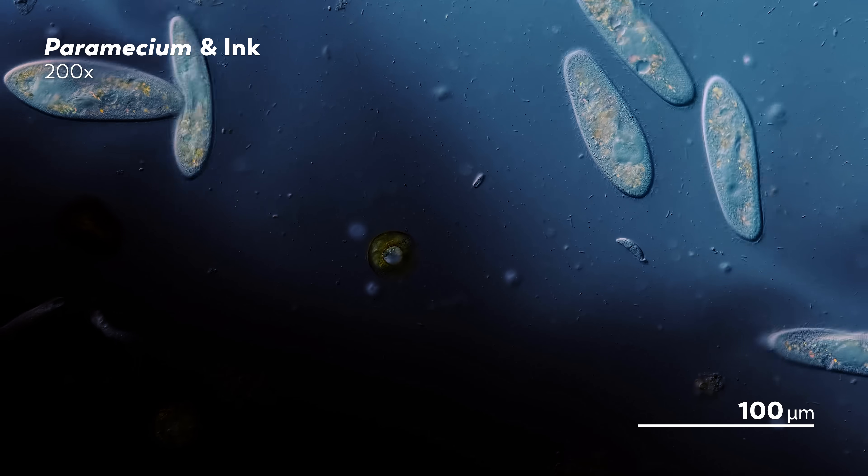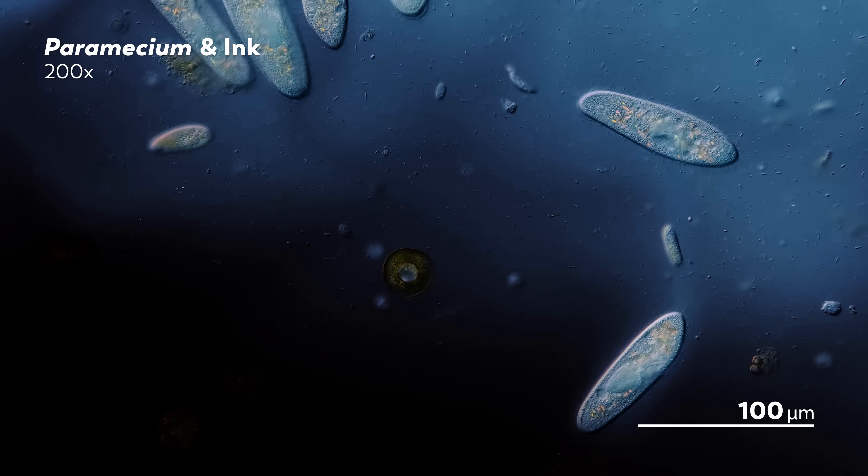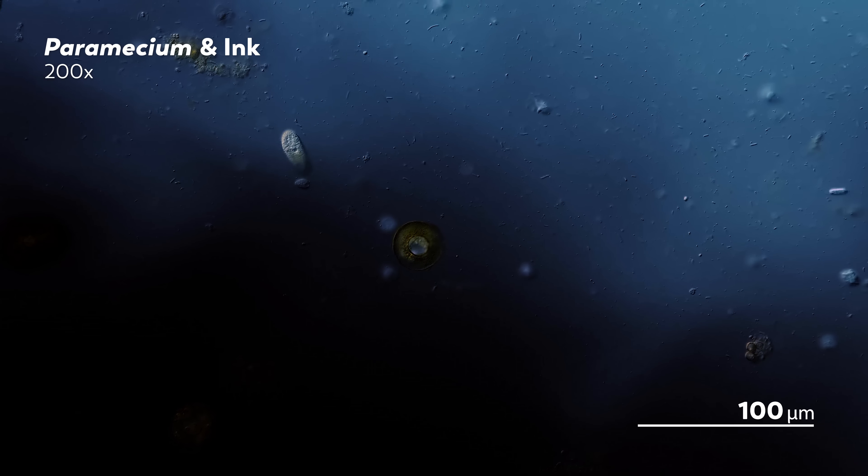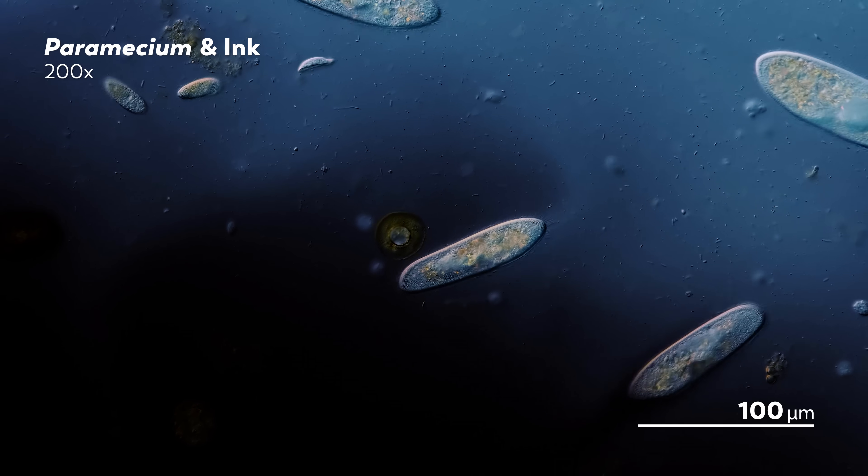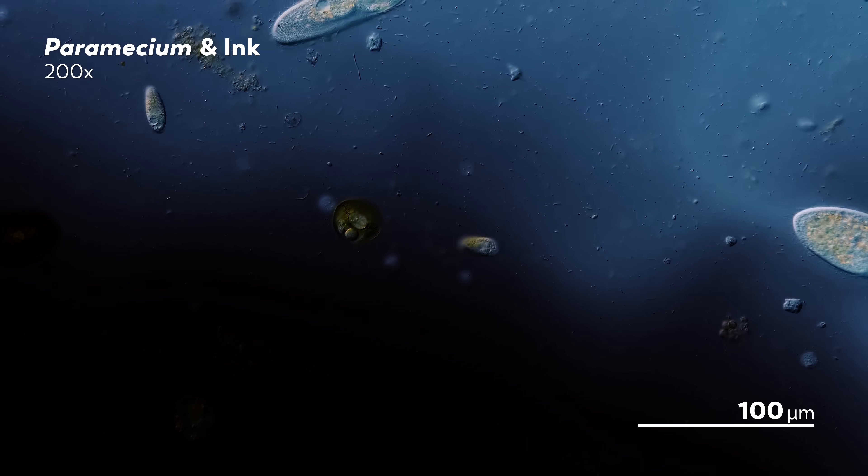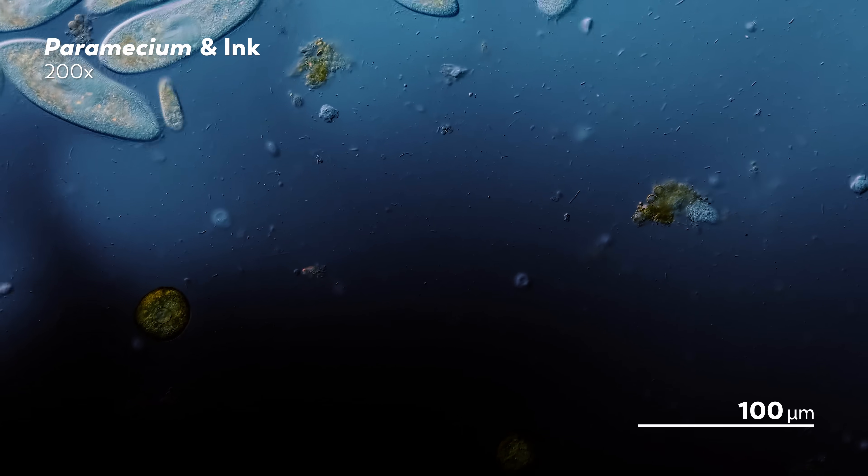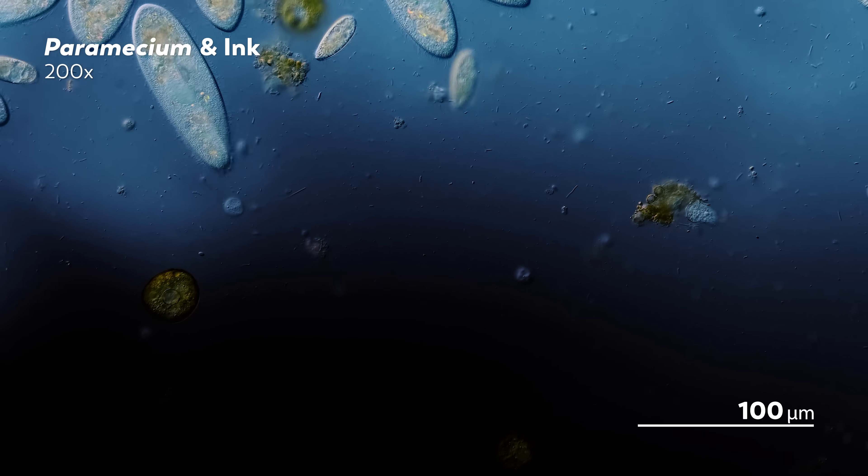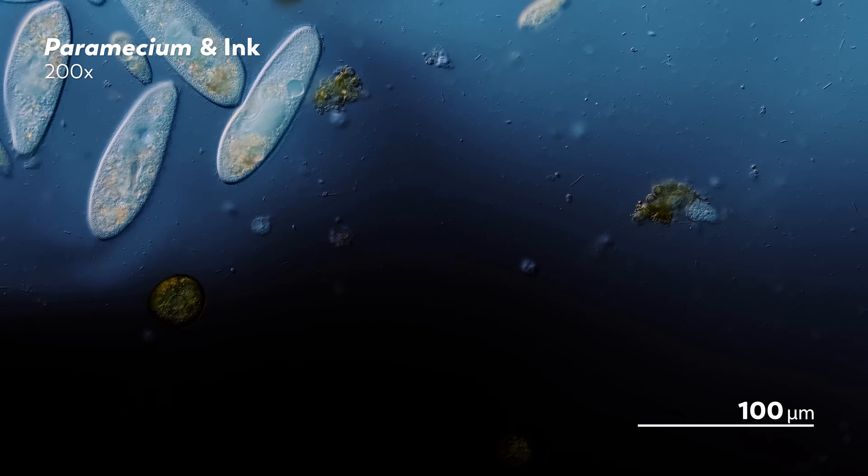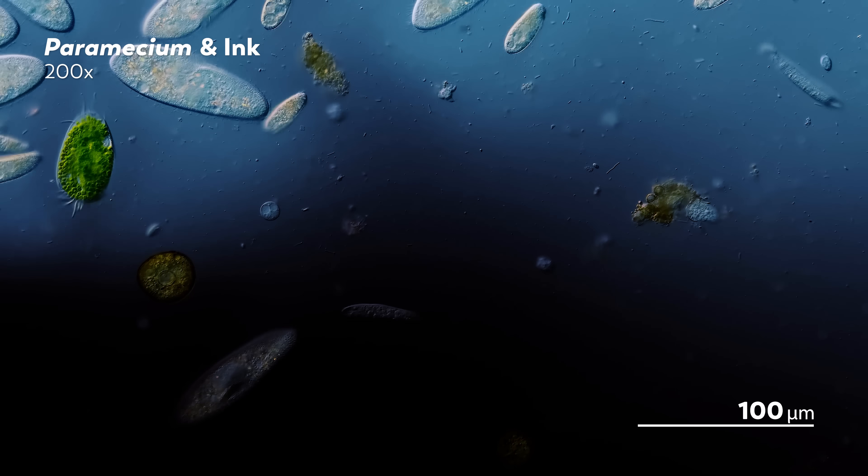Take this slide, for example. It probably looks like James accidentally spilled some ink on the slide, which is in fact almost exactly what happened. There is ink on this slide, but it didn't get there by accident. James added it on purpose. As different parameciums swim in and alongside the ink, you can see the trails they leave behind, a record of the paths they took along the slide.